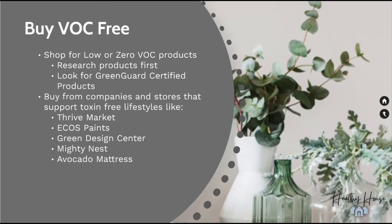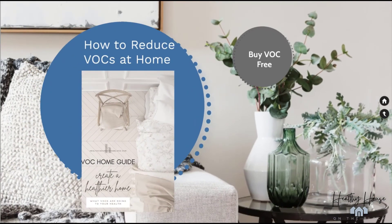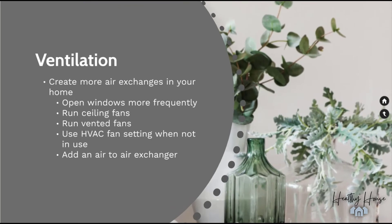In this week's blog post, I've listed out some bigger purchase items where I've done the research for you — mattresses, couches, flooring, plywood, adhesives, cleaning products, and paints. The second strategy is ventilation: since escaping all VOCs is nearly impossible, and because of our energy-efficient homes, there will always be some level of VOCs. Ventilating your home by opening windows and doors on a regular basis, as well as running vented fans or air-to-air exchangers, is the best way to bring fresh air in and push toxic air out.